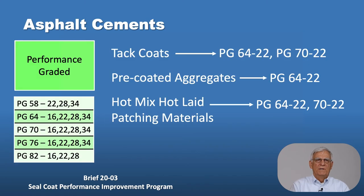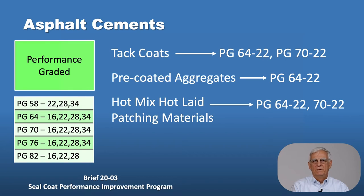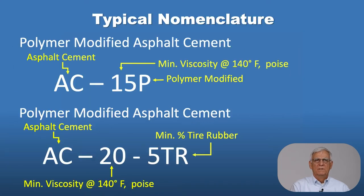The performance graded asphalts are primarily used for hot mix hot lane materials or hot mix applications. PG 70-22, 70-28, and 64-22 are very popular forms of these materials. PG 64-22 performance graded asphalt cements have also been used for pre-coated aggregates, and tack coats are sometimes placed with asphalt cements as well.